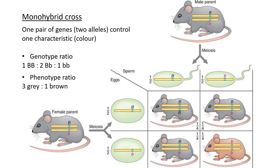A monohybrid cross involves one pair of genes - two alleles for whatever characteristic you're looking at, on two chromosomes. These two alleles control one characteristic, in this case color. For a more in-depth walkthrough of monohybrid and dihybrid crosses, refer to the life sciences videos. For agriculture, you don't usually need to do it step by step - they ask you to do a Punnett square and then answer short questions about it.